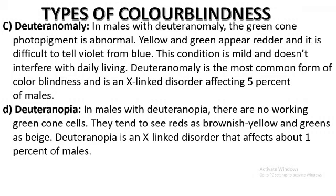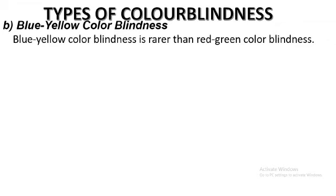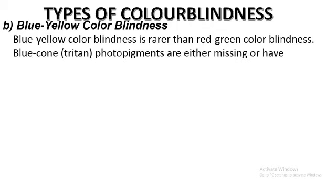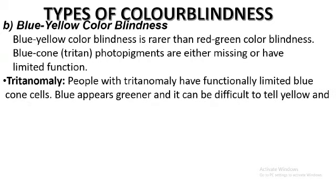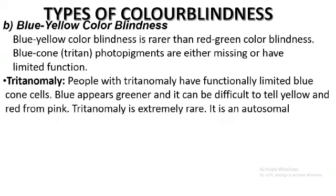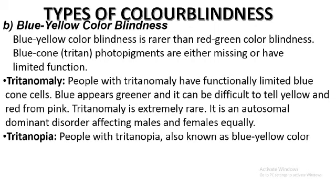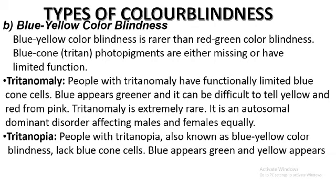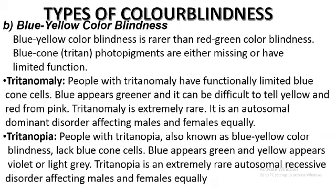The second main type of color blindness is blue-yellow color blindness, which is rarer than red-green color blindness. In tritanomaly, blue cone cells have limited function — blue appears greener and it is difficult to distinguish yellow and red from pink. This affects males and females equally. In tritanopia, blue cone cells are absent — blue appears green, and yellow appears violet or light gray. This also affects males and females equally and is a rare disorder.